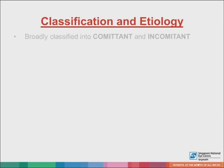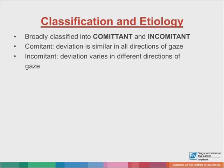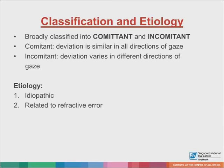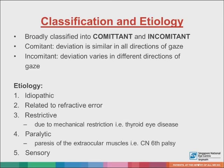There are two main ways of classifying strabismus. It can be broadly classified into comitant and incomitant causes, where comitance means that the angle of deviation is similar in all directions of gaze, and incomitant strabismus means that deviation varies in different directions of gaze. Another way to classify it is according to its etiology: it can be idiopathic, related to a refractive error, restrictive — for example due to thyroid eye disease — paralytic, or sensory due to poor vision in the eye.